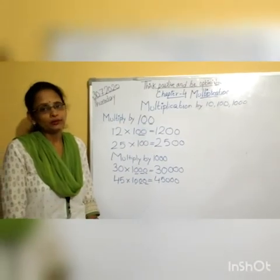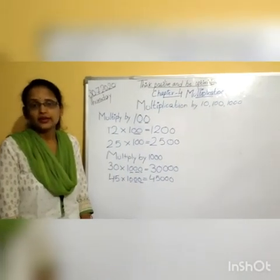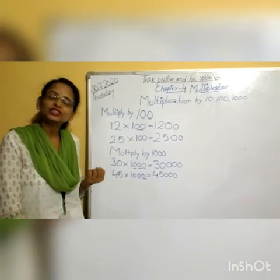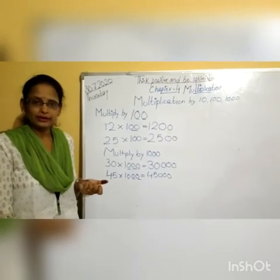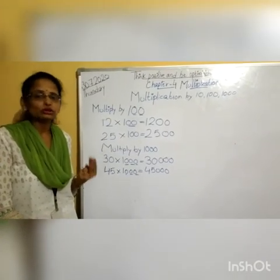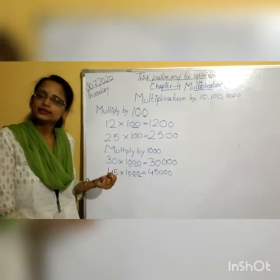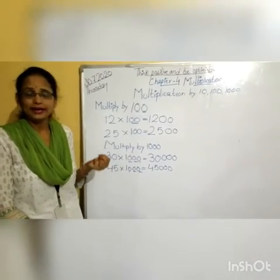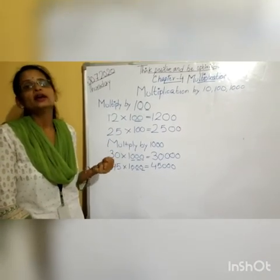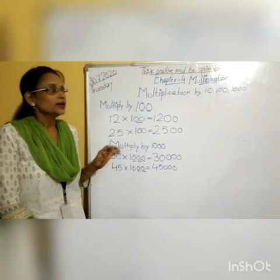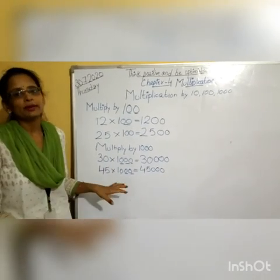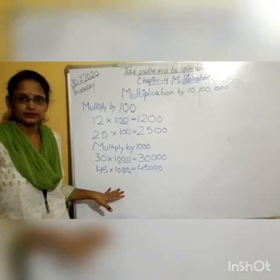Students, you have to remember just a simple thing: whenever you multiply any number by 10, add one zero to the extreme right of the number in the answer. Whenever you multiply any digit by 100, add two zeros to the extreme right of the number in the answer. And whenever you multiply any digit by 1000, add three zeros to the extreme right of the number in the answer. Basically, multiplication by 10, 100 and 1000 through this method helps you do the multiplication in an easier and better way.